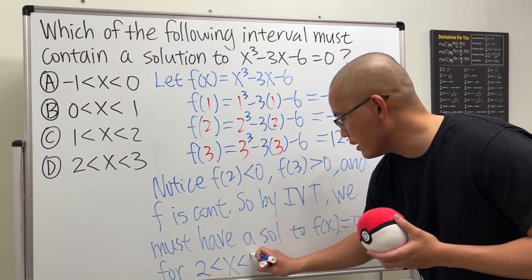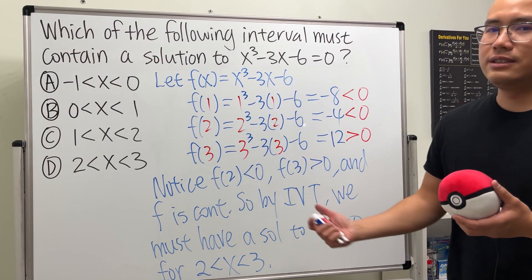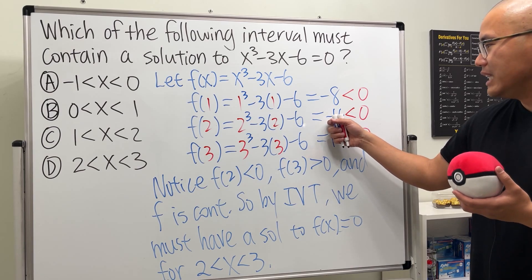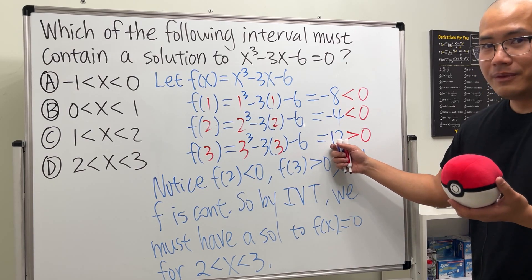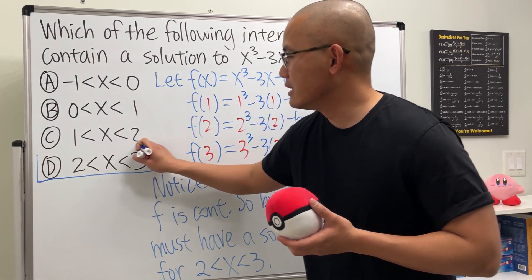So I'll just say for the x values in between of 2 and 3. So I'll just say like this, all right? So that would be like to write it out. But of course, this is just a multiple choice question. The moment that you see we get negative on one endpoint and the other value is positive, then you can just go ahead and say the answer is D.